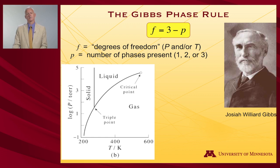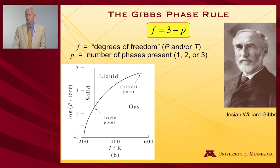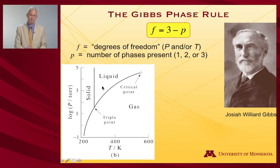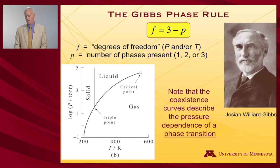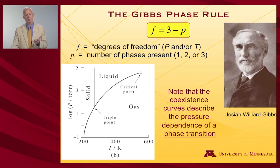When two phases are present, the degrees of freedom are 3 minus 2 = 1. You can adjust either pressure or temperature, but not both independently — the other must change to keep both phases present, and you follow the coexistence curve. For instance, on the liquid-gas coexistence curve, if you raise the pressure, you must also increase the temperature to stay on the curve. If you simply increase pressure without adjusting temperature, you compress all the gas into liquid and no gas remains.